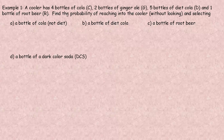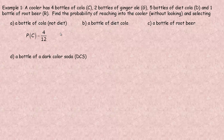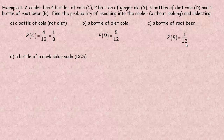Example one: a cooler has four bottles of cola (C), two bottles of ginger ale (G), five bottles of diet cola (D), and one bottle of root beer (R). You're randomly selecting a bottle. There are 12 bottles total. The probability of getting a regular cola is 4/12, which reduces to 1/3. The probability of getting a diet cola is 5/12. The probability of getting a root beer is 1/12.